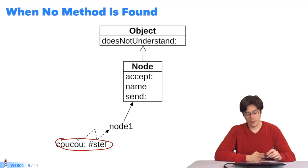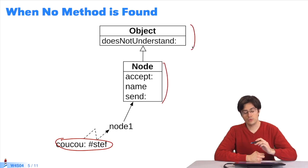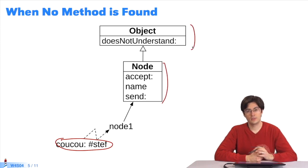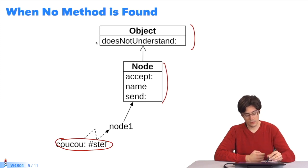If I go through it again step by step, cuckoo is sent to Node1. A match is sought in the class, then in the superclass. Cuckoo is not there,